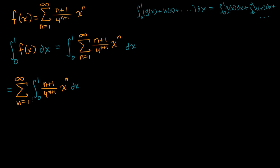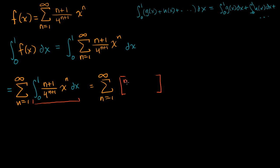Let's evaluate this. This is going to be equal to the sum from n equals one to infinity. Taking the antiderivative, we get x to the (n+1), and then we divide by (n+1). We have the original (n+1) over 4 to the (n+1) — that's just a constant in terms of x. We increment the exponent and divide by that incremented exponent, using the reverse power rule. So it's (n+1) over 4 to the (n+1) times x to the (n+1) over (n+1), evaluated from zero to one.